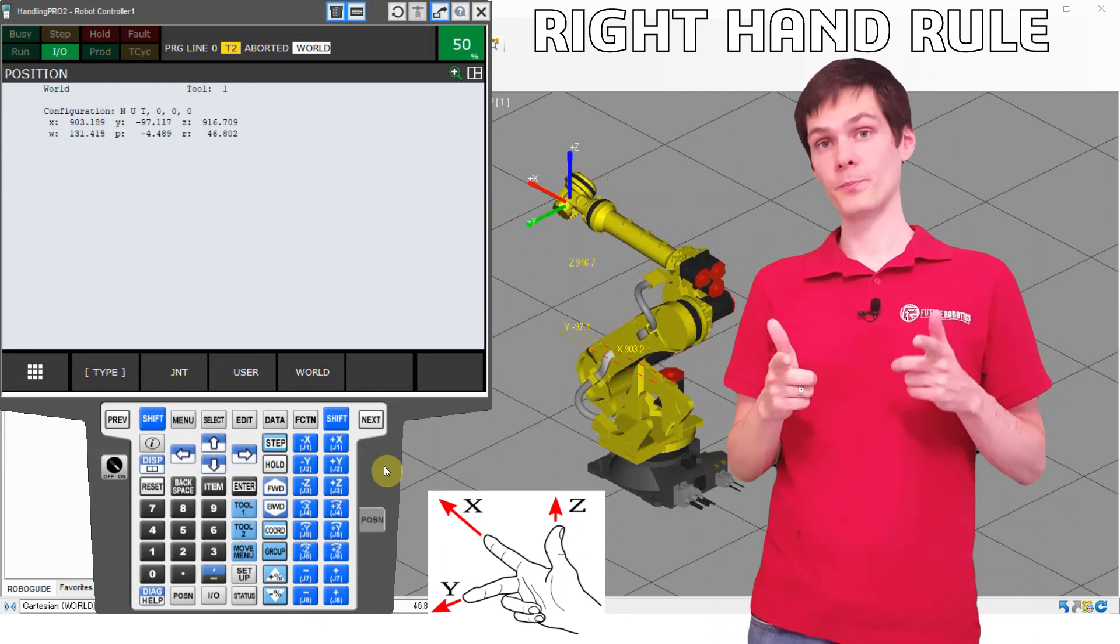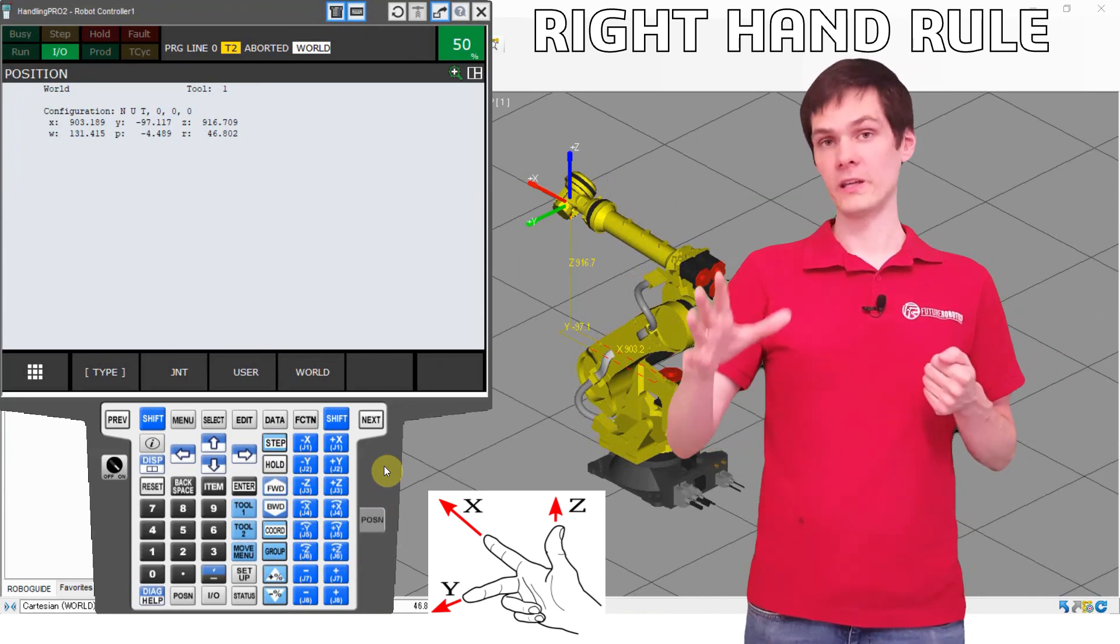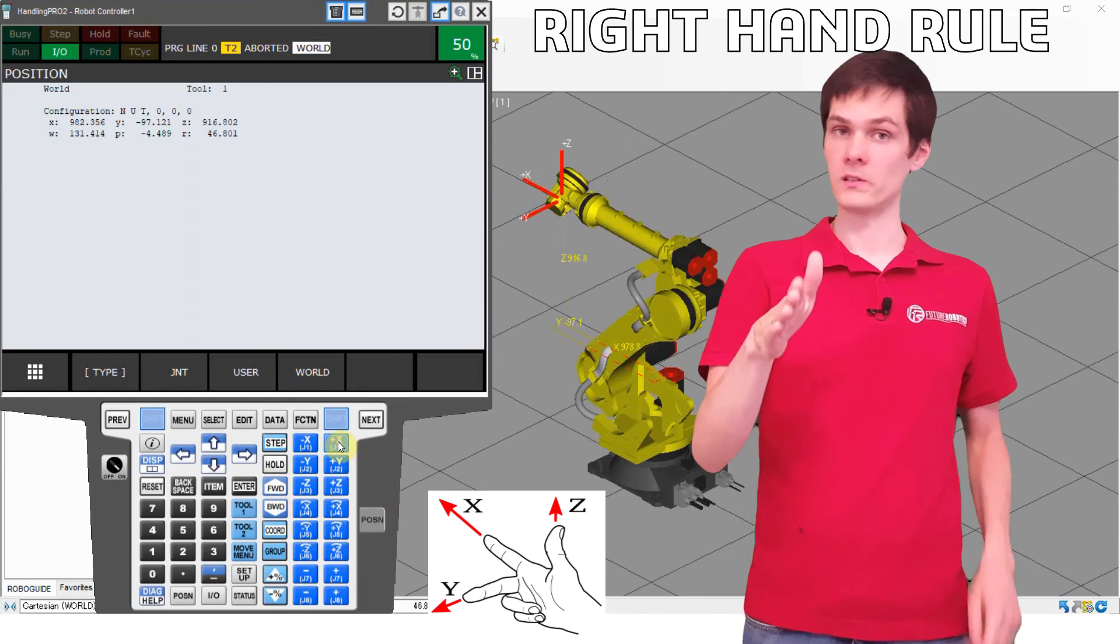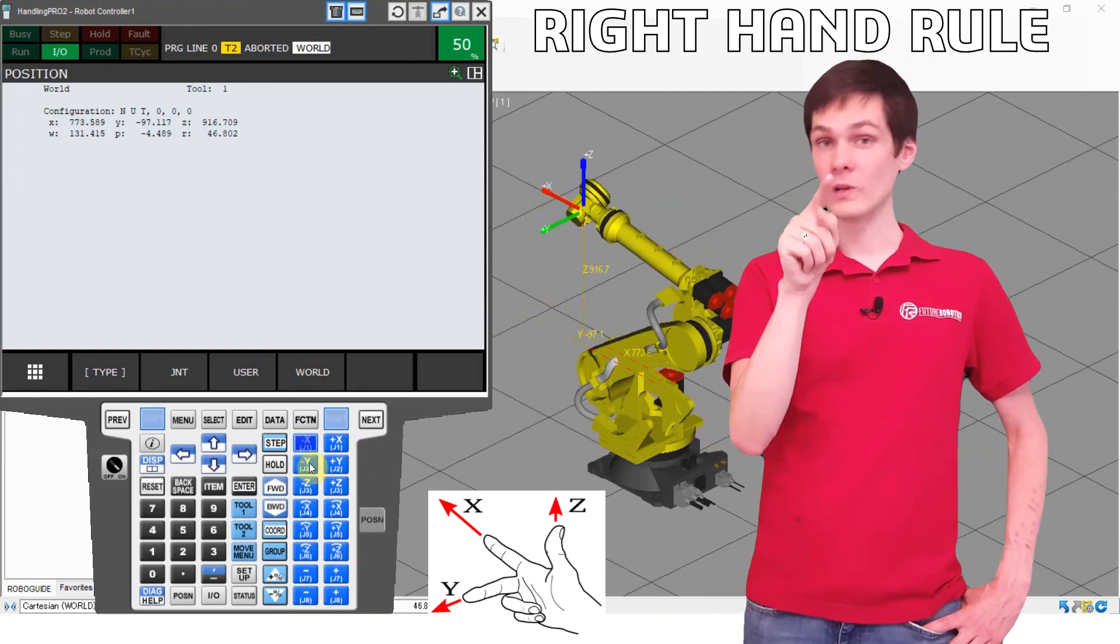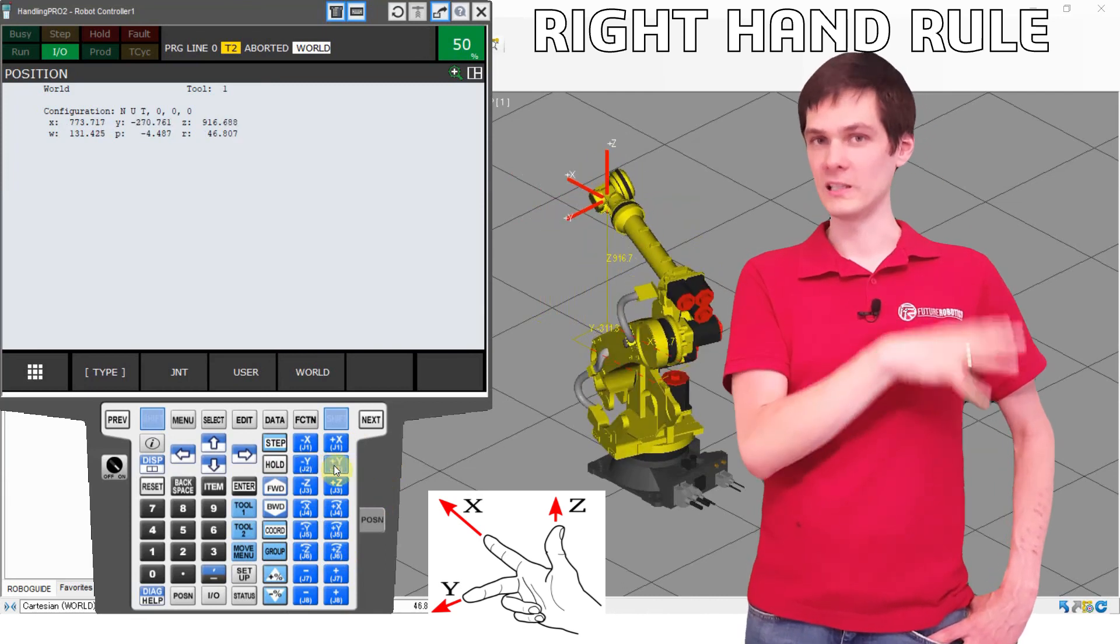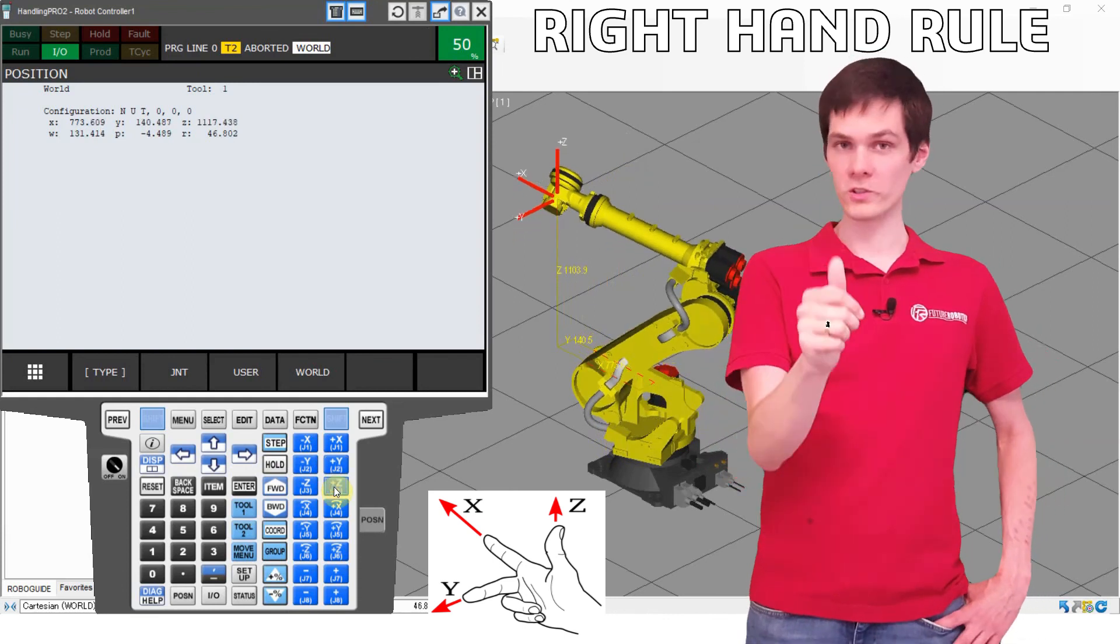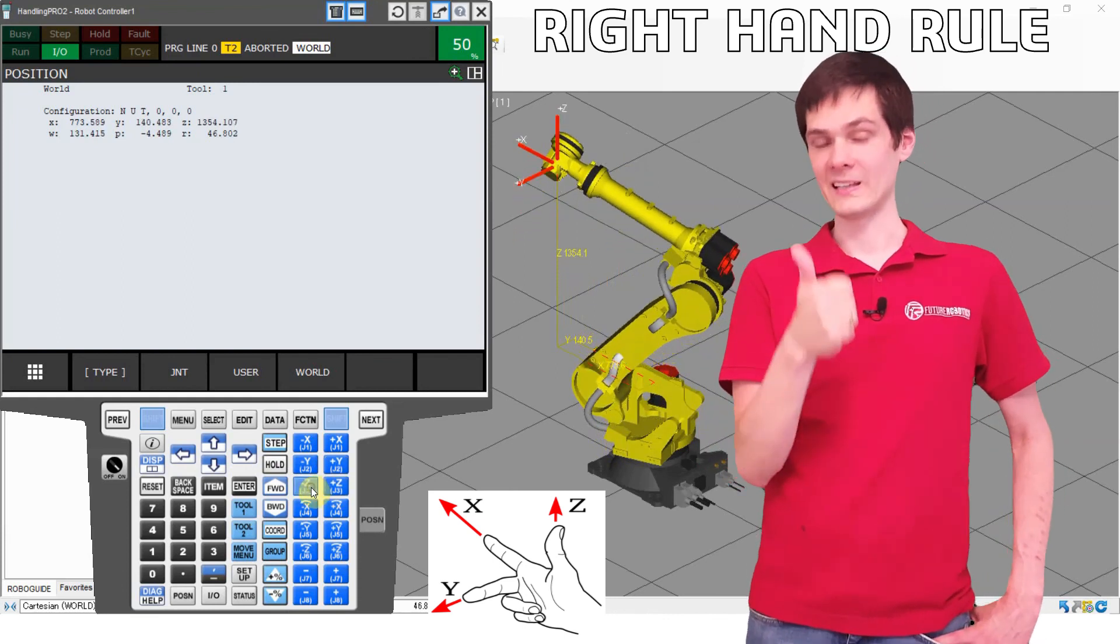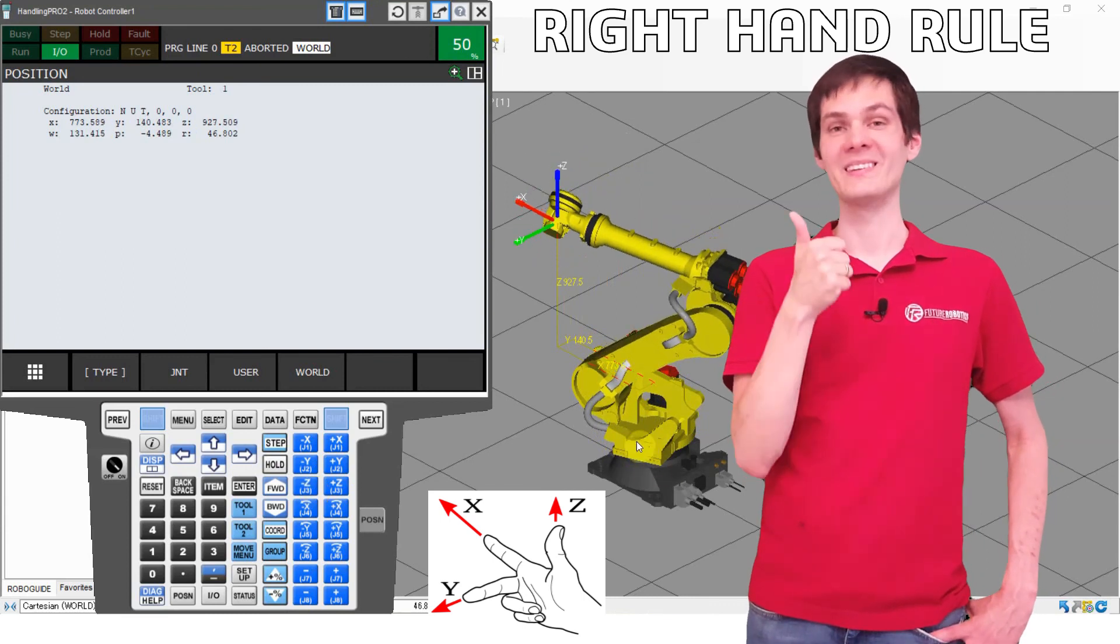Okay, so now let's practice a little bit more. Try to jog the robot in all of the directions. Try to jog it x plus, x minus. Remember the right hand rule because it will apply to the other coordinate systems that we will talk about a little bit later on. Because for now I want you to remember that the world coordinate system is always located at the robot base. This is your base system. It never changes.